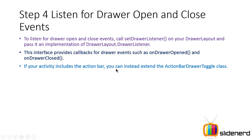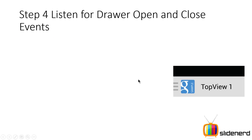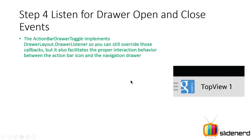Now, you don't have to directly implement this interface. There is a class called ActionBarDrawerToggle that already implements this interface. In other words, create an object of this class and you're good to go. So let's take a look at why we need this.